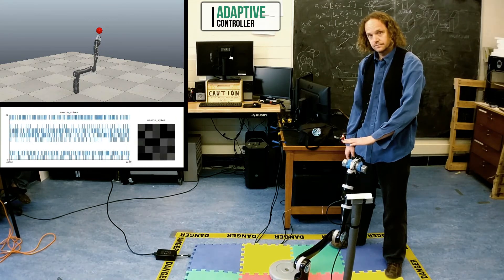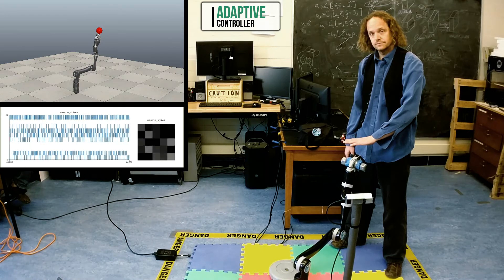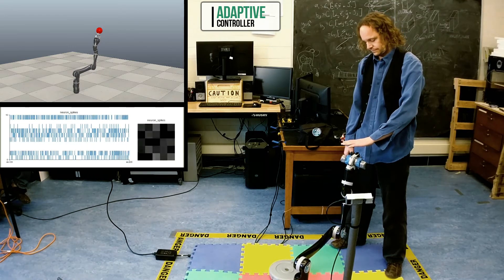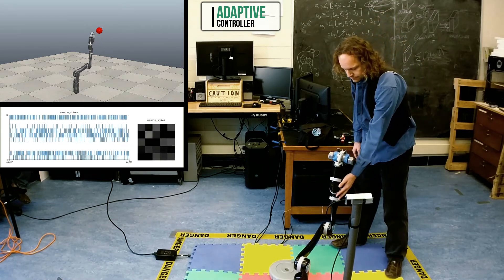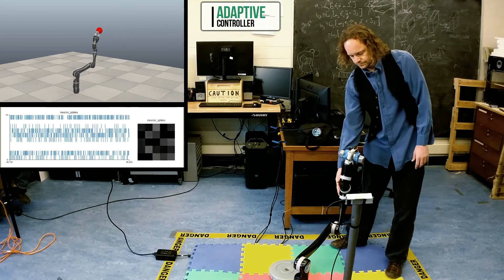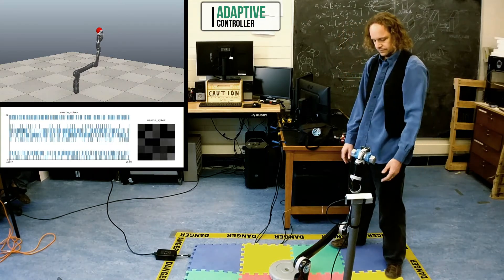Changes in the neural activity indicate how the controller is learning to account for the unknown dynamics introduced by the weight, allowing the arm to move to the target. The spiking neural network is updating its connection weights to improve the model of the arm.